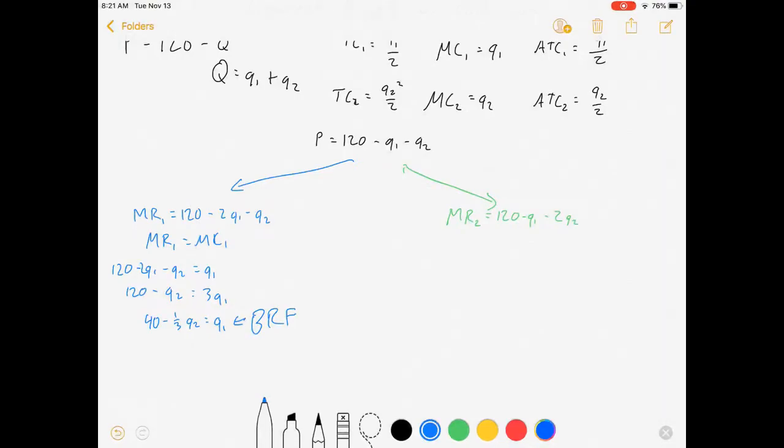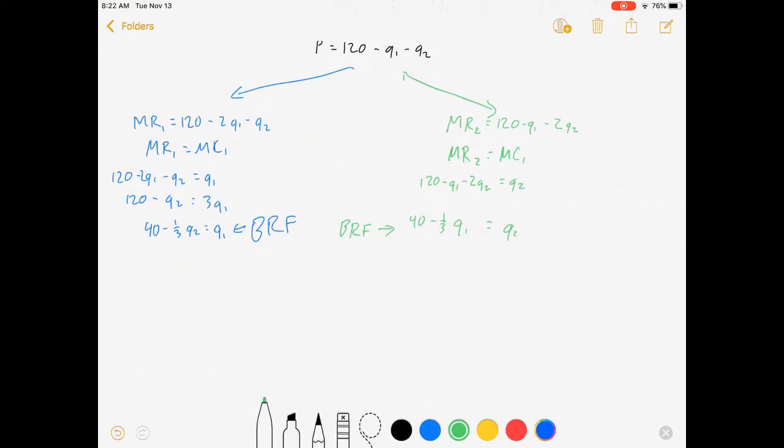Firm two is going to do a very similar problem. I've made these firms identical to each other. Let's see: 120 minus q1 minus 2q2 equals q2. q2 equals 40 minus one-third q1. This is firm two's best response function. So both of them have some idea of what they want to do given whatever the other one is doing.